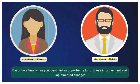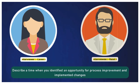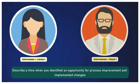Describe a time when you identified an opportunity for process improvement and implemented changes. Process optimization is a core part of my job role. One time I noticed that our incident resolution times were higher than expected due to inefficient escalation procedures. I went through the escalation procedures again with the client and my team, then proposed and implemented a revised escalation process that reduced resolution time by 30% — a huge margin. The client was very happy with the results. We continuously analyze data from reports and performance analytics to find opportunities for further improvement.